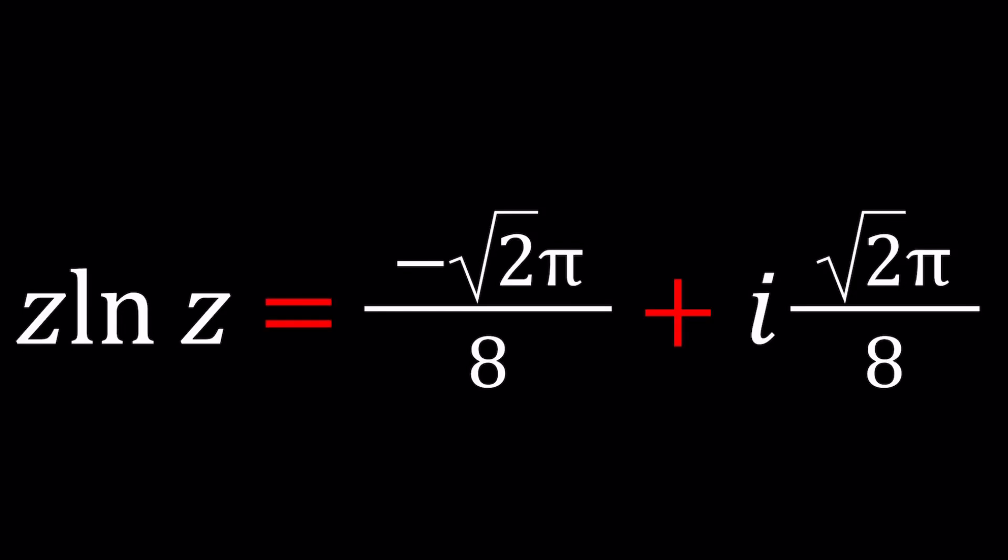Hello everyone, welcome to a plus bi. This channel is all about complex numbers and in this video we're going to be solving a very nice homemade equation with complex numbers. We have z ln z equals negative square root of 2π over 8 plus i times the square root of 2π over 8 and we're going to be solving for z values.